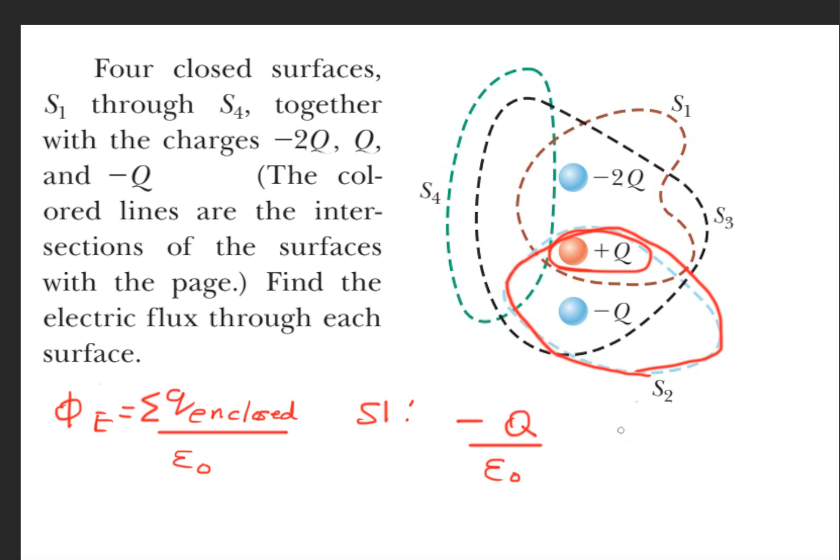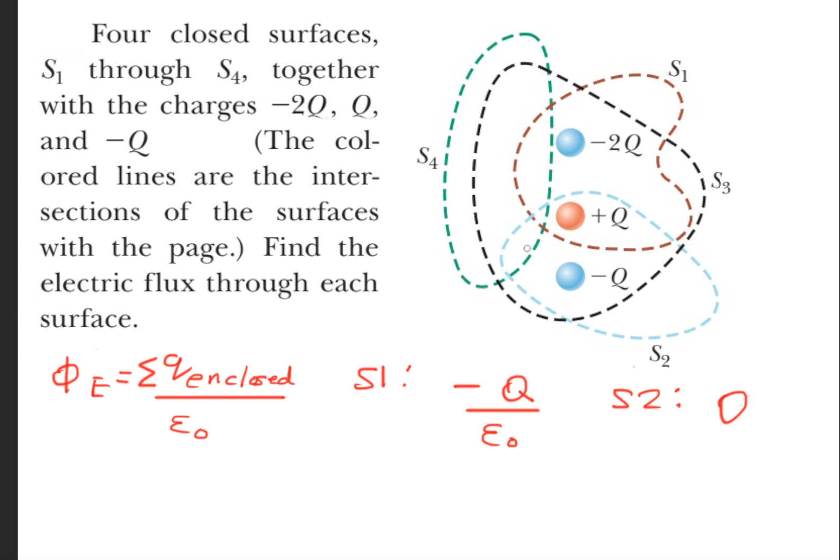So if we go ahead and do surface 2, we have minus Q plus Q over epsilon naught. It's apparent that this is going to have no flux, so the answer is zero.